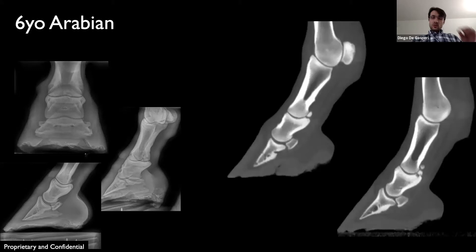We CT'd the horse and CT revealed bilateral fragmentation of the proximal palmar articular surface of the middle phalanx. The right side was more severely affected with multiple fragments, one of which was associated with a portion of the proximal palmar articular surface of P2.